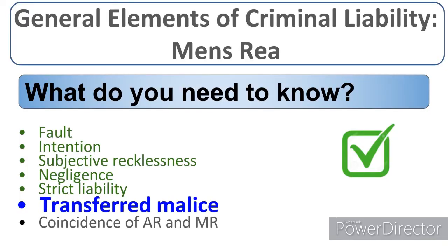This is another lesson on the general elements of criminal liability related to mens rea. We've already covered fault intention, recklessness, negligence, and strict liability. So today's session is on transferred malice, and it's fairly straightforward.